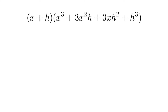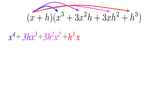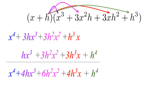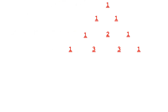Suppose we have (x plus h) to the 4th. We can write this as (x plus h) times (x plus h) cubed. Multiplying through, we have x to the 4th plus 3hx cubed plus 3h squared x squared plus h cubed x. Combining like terms, we get 1x to the 4th, 4hx cubed, 6h squared x squared, 4h cubed x, and 1h to the 4th — which is indeed 1, 4, 6, 4, 1 from Pascal's triangle. This is much faster than multiplying out directly.